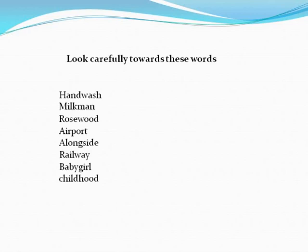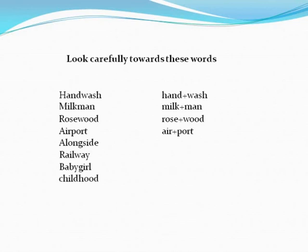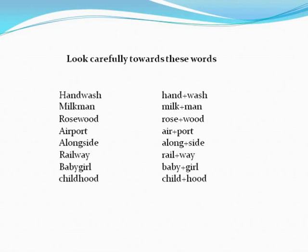These are the combination of root words. The words in front of you are formed by bringing together two root words. Hand plus wash — Handwash. Milk plus man — Milkman. Rose plus wood — Rosewood. Air plus port — Airport. Along plus side — Alongside. Rail plus way — Railway. Baby plus girl — Baby girl. Child plus hood — Childhood. These words have been formed by combining together two words.